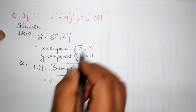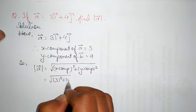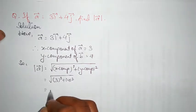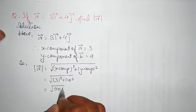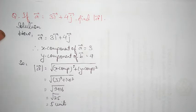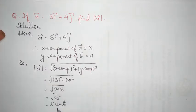Its value: x component of vector a is 3, squared is 9; y component is 4, squared is 16. So root under 9 plus 16 equals root under 25, which equals 5 units. Therefore, the magnitude of vector a is 5 units.